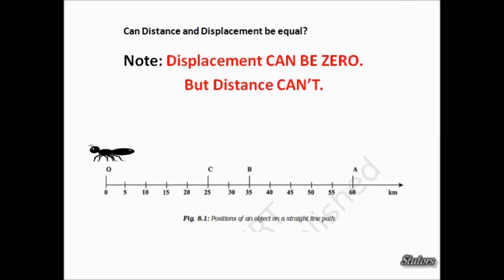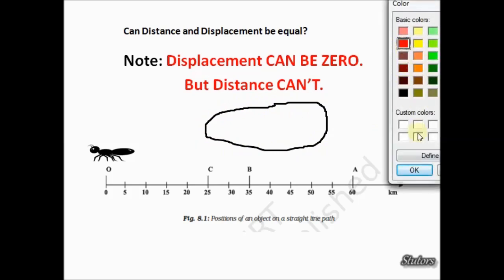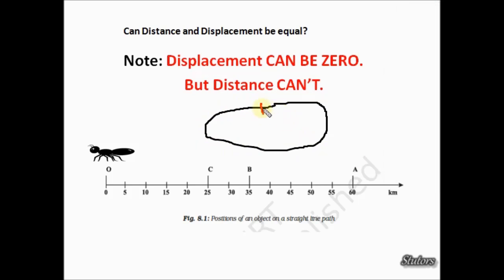This is the case when a sprinter runs around a track. The starting point is somewhere here, and after each lap the distance covered keeps increasing. But if the final position is the same as the starting position, the displacement is zero — but the distance is not.